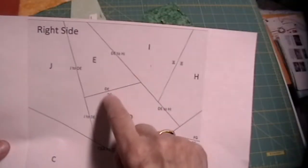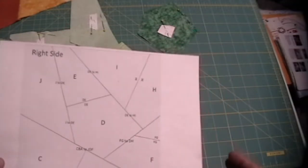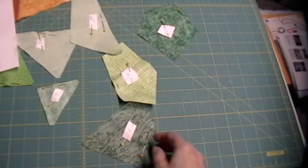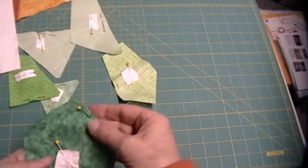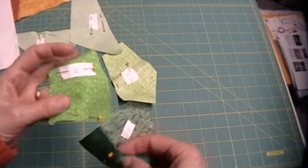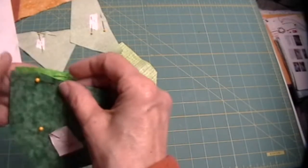Two more that have a single letter would be my D and my E. Let me find those. Here is my D. It has a pin on the edge where I pinned it. And here is my E. So I am going to put right sides together.